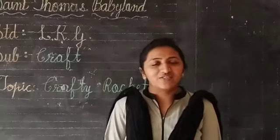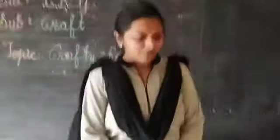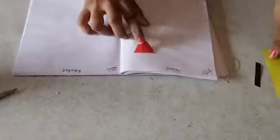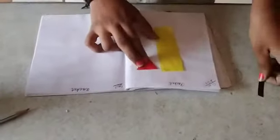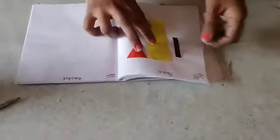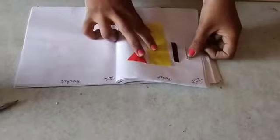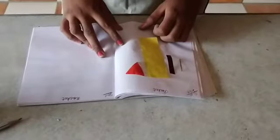Okay children, so how to make a rocket? First of all, which shape is needed? First of all, triangle. Then which shape? Rectangle. Then small rectangle. And then very smallest rectangle. These four shapes are used for the rocket.